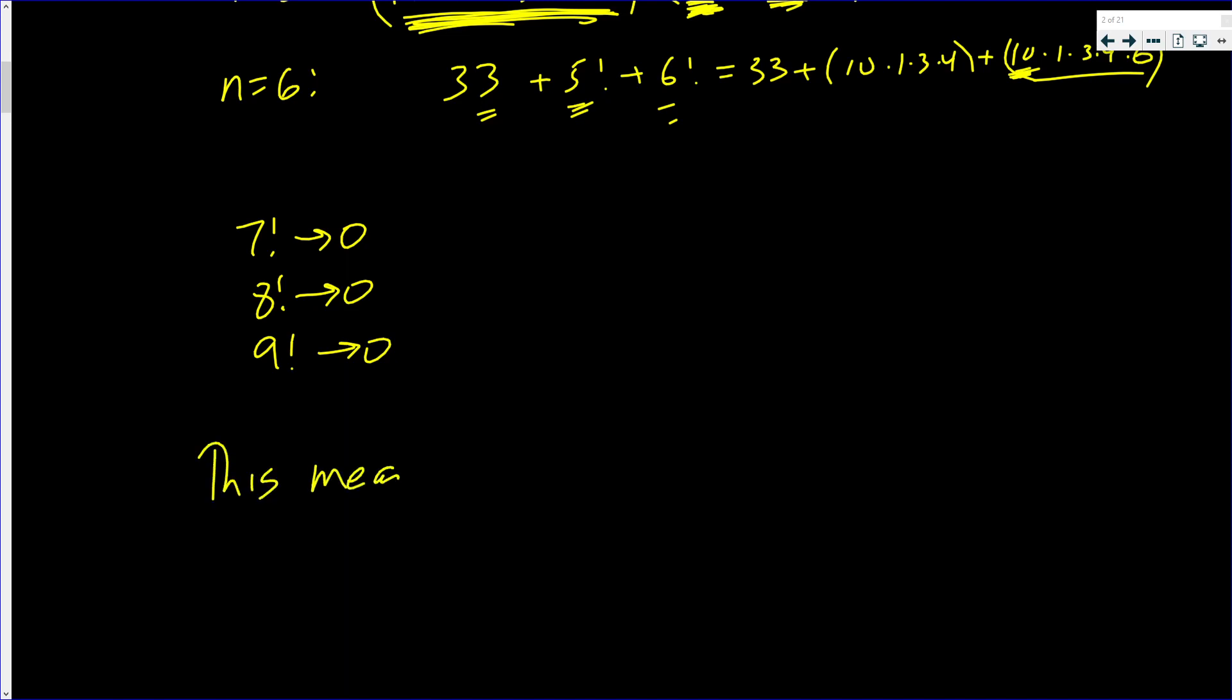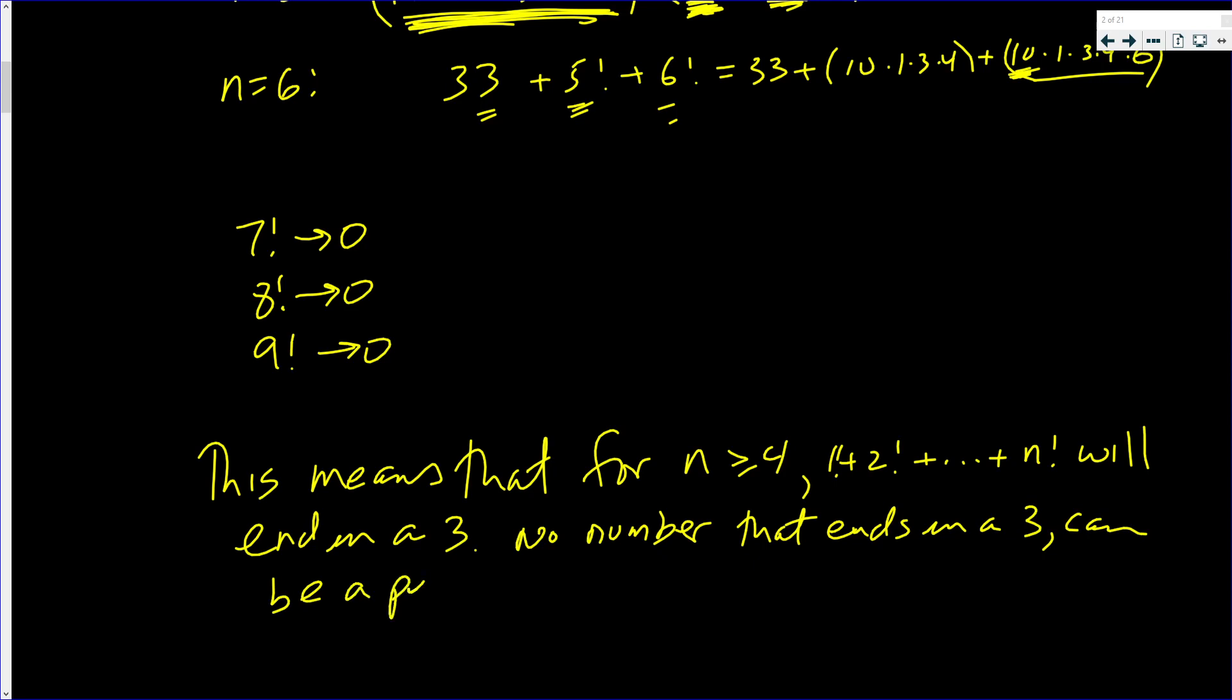This means that for n greater than or equal to four, one factorial plus two factorial plus n factorial will end in a three. No number that ends in a three can be a perfect square.